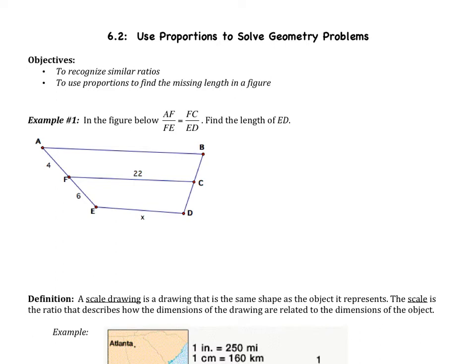Let's jump right to example number 1. It says in the figure below, AF over FE equals FC over ED. Find the length of ED. Hopefully you remember from yesterday's video that this is called a proportion. I have two ratios that are set equal: AF over FE, that's one ratio, and then FC over ED, that's a second ratio. All I have to do now is fill this in.